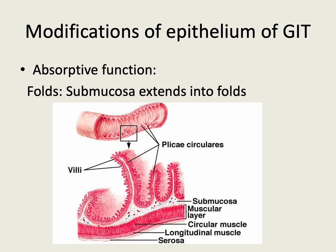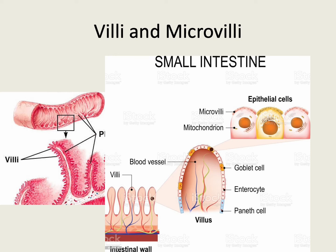The epithelium of the gut presents an extensive absorptive surface. The factors contributing to the increase in surface area are: first, the folds — there are numerous folds which can be seen by the naked eye in the mucous membrane, and they are called the plicae circularis of the small intestine. In the small intestine, the mucosa appears with numerous finger-like projections.